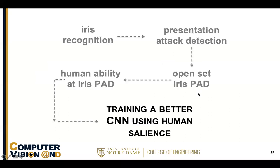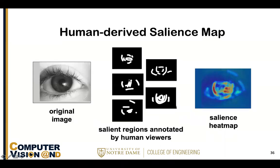Now we come to the main destination topic: how to train a better CNN using information about the regions that humans find salient in the image — human-derived salience maps. How do we create a consensus map of where the salient regions are in the image for human decision making?